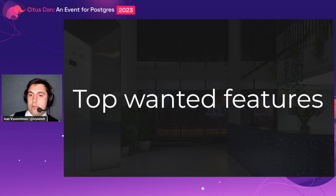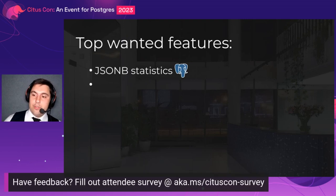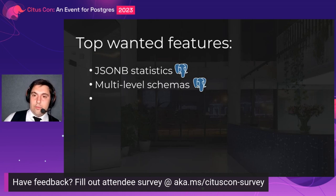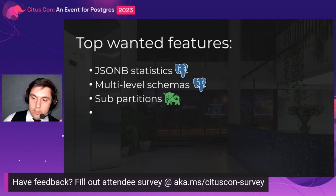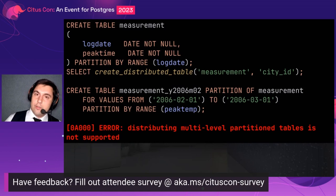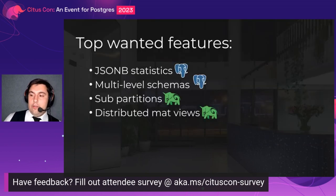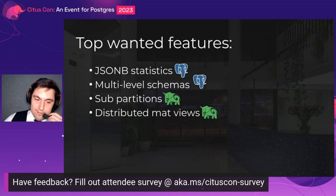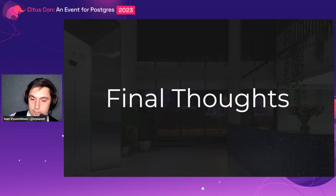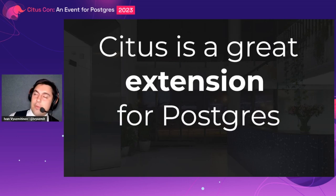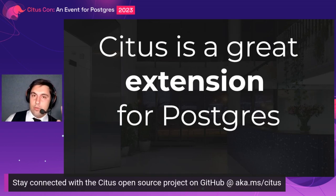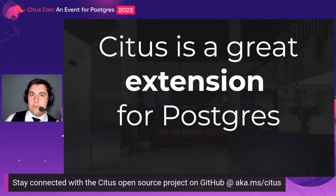Here are the top wanted features to make our solution near ideal. From Postgres, JSONB statistics. I'd also like multi-level schemas instead of databases so cross-database references are resolved. From Citus, I'd like sub-partitions — currently it is not possible to create a partition of a partition — and distributed materialized views. As final thoughts: Citus is a great extension for Postgres. It delivers exactly what is promised in the docs, but it is an extension, so you should be prepared for some edge cases uncovered and integration issues. You can find this presentation on SpeakerDeck.